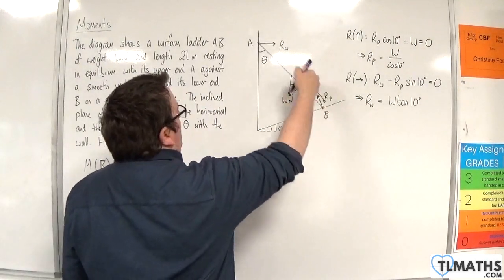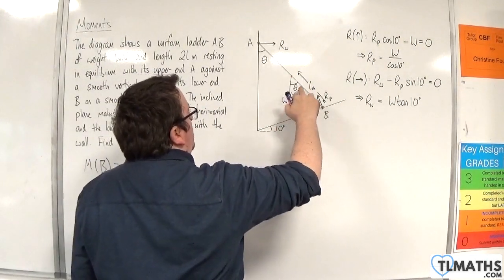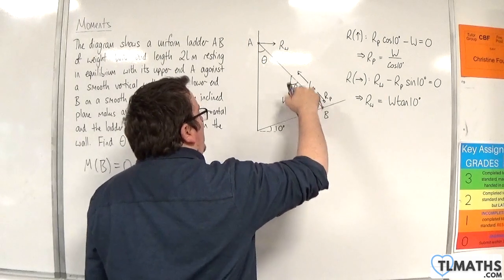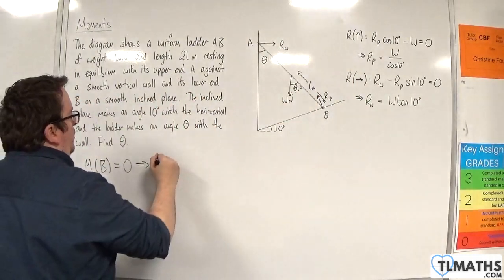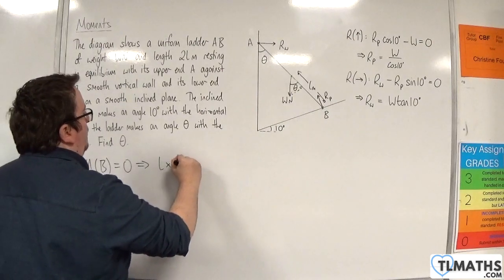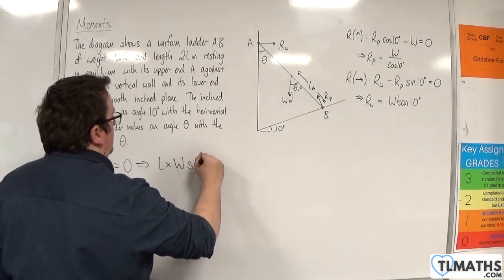So, I am L meters away from W sine theta, and that's going in an anti-clockwise motion. So, we have L times W sine theta.